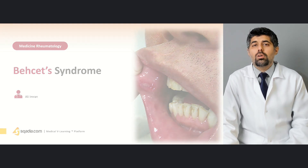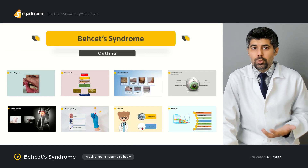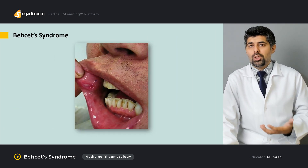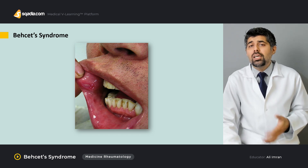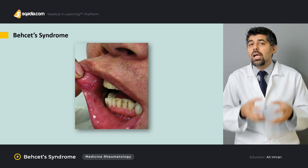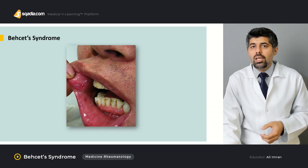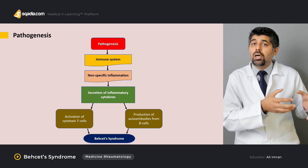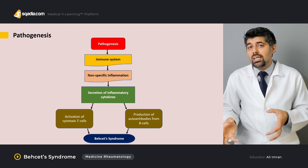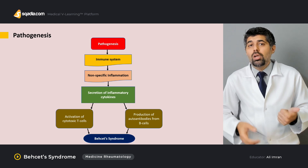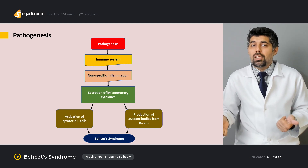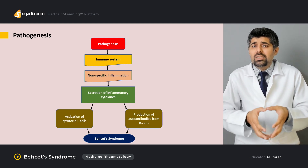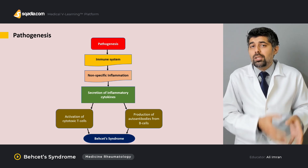In this lecture we're going to study about Behcet syndrome. To outline the lecture, we're going to study about its introduction, its history, its etiology along with its epidemiology. Then we're going to learn about its pathogenesis, why it's called a mixed disorder, and how it has both the autoimmune and the auto anti-inflammatory components to it, and how both of these comprise the cascade of its pathogenesis.